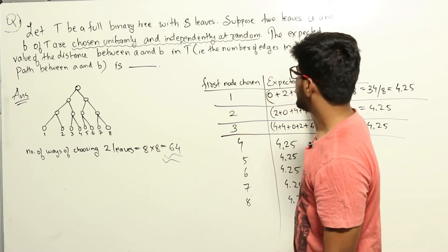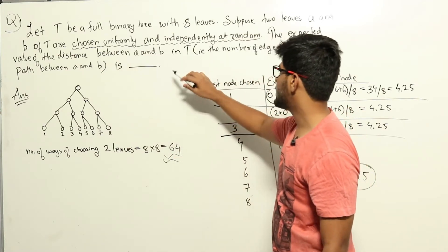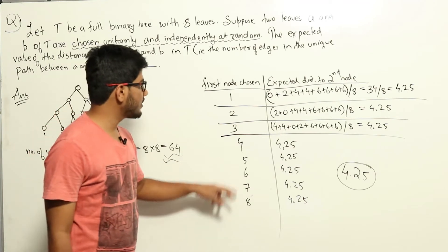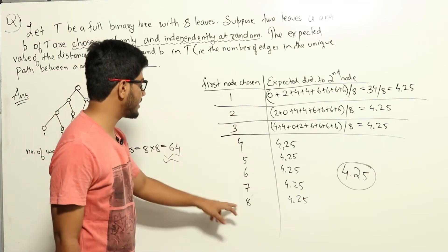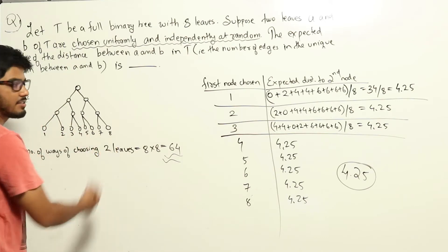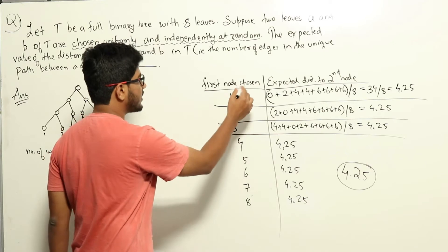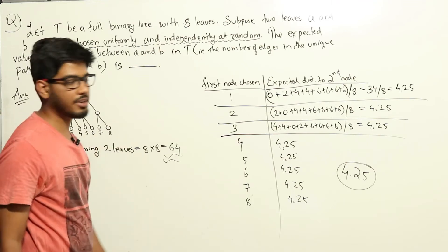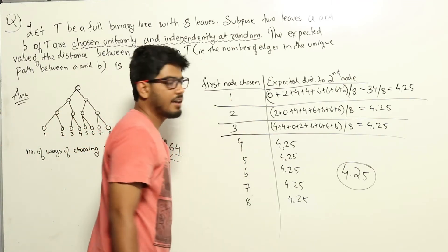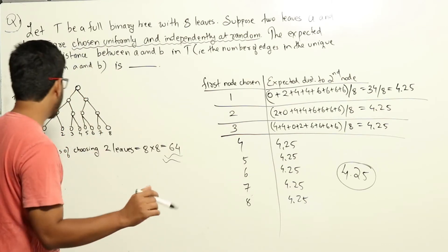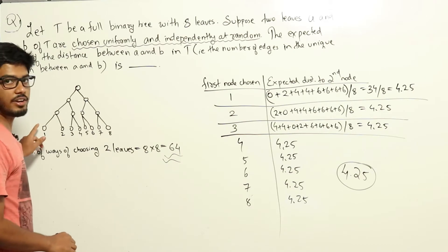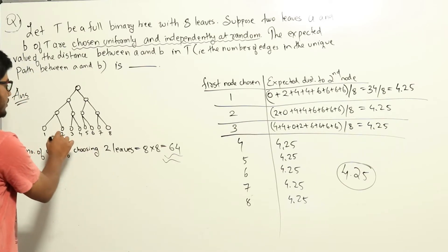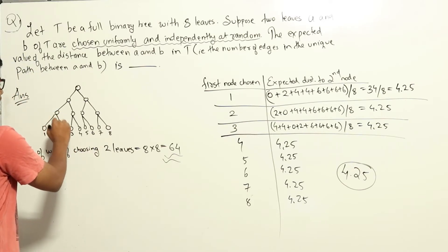They are asking the expected value of the distance between the two leaf nodes A and B. Let us draw a table. The first node chosen can be 1 through 8, and the second node can also be 1 through 8. If the first node chosen is 1, the second node could also be 1, giving distance 0 since it is the same node. If the second node is 2, the distance from 1 to 2 is 2.